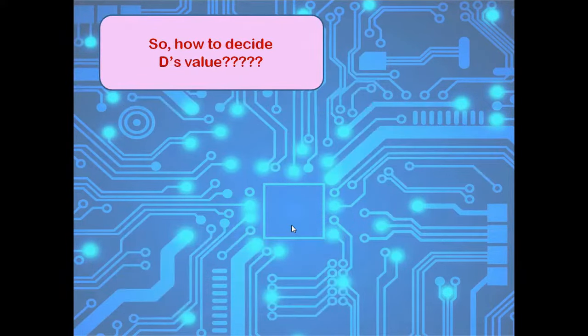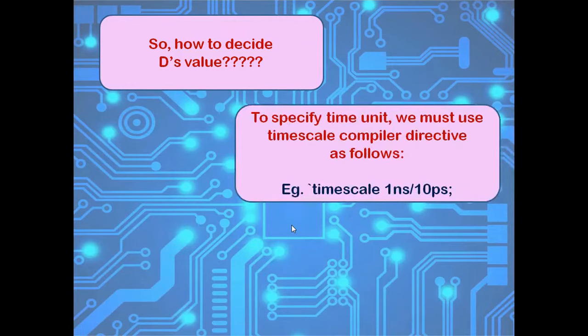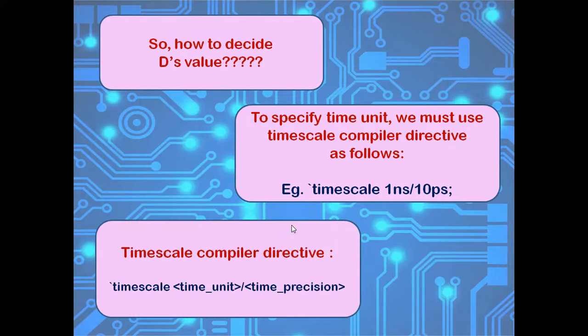So, how to decide this value? For this, we need to specify time unit. For that, we should use timescale compiler directive.